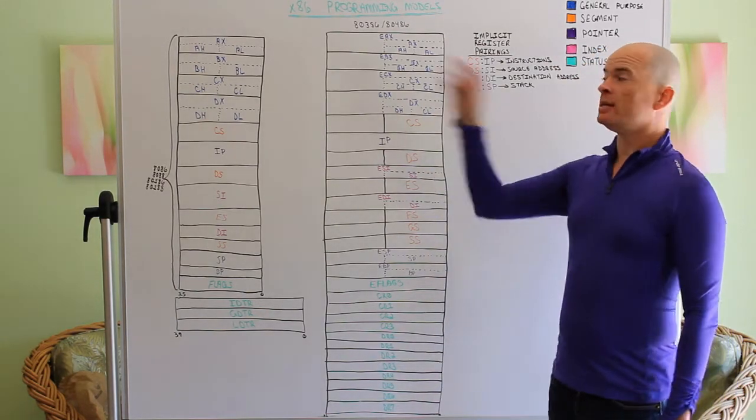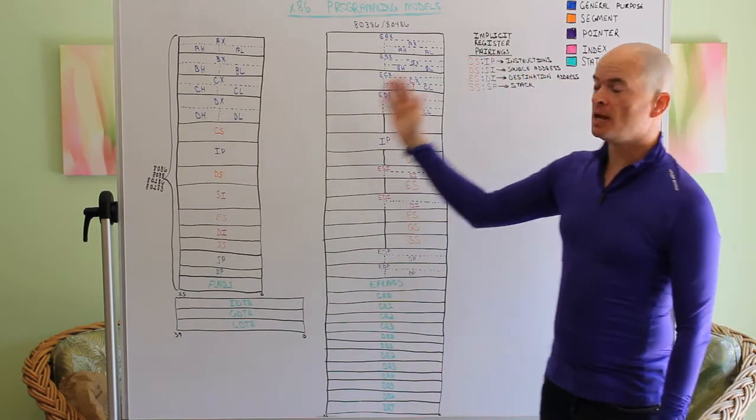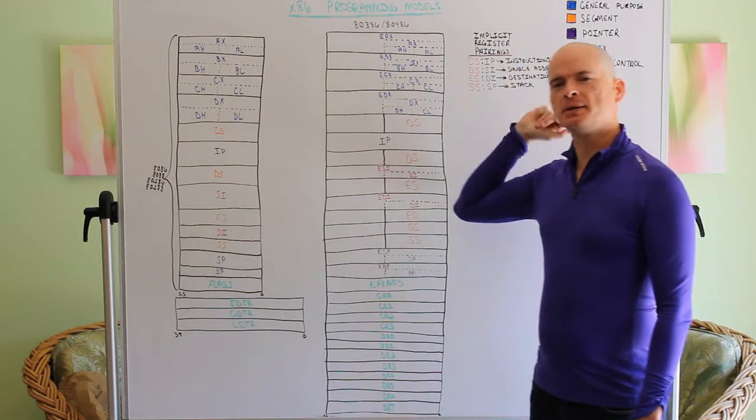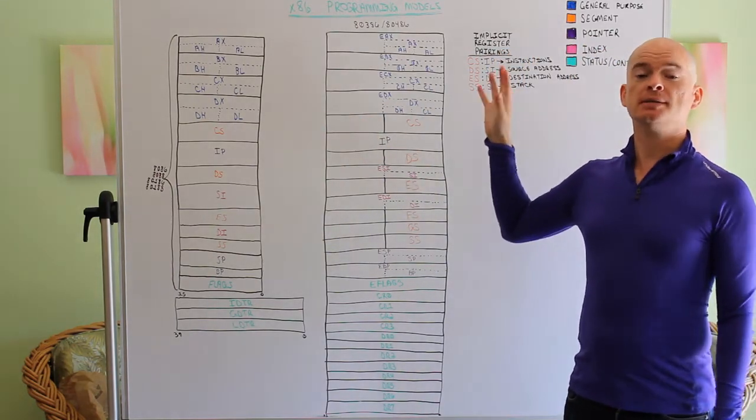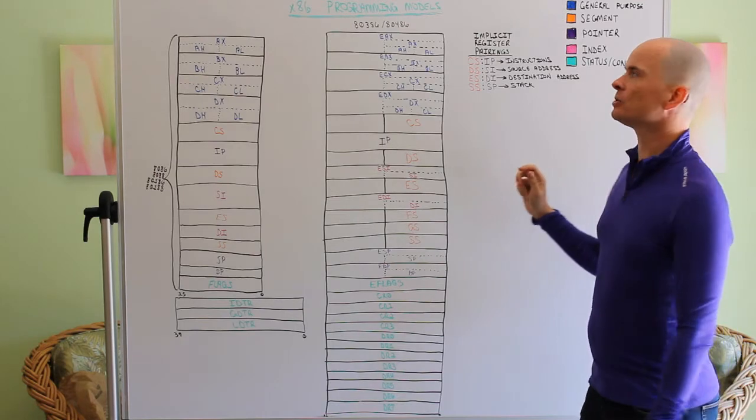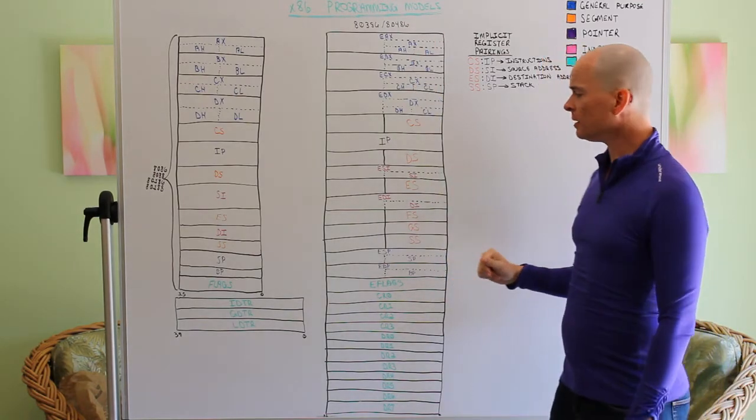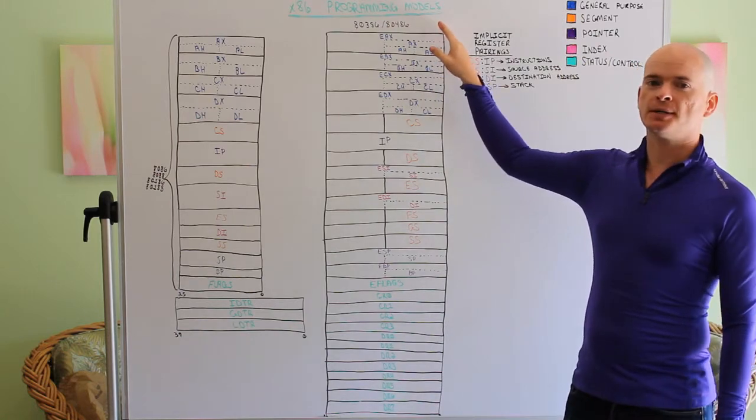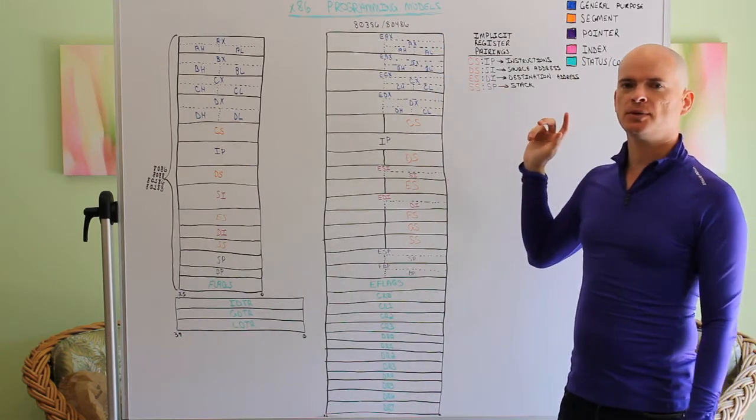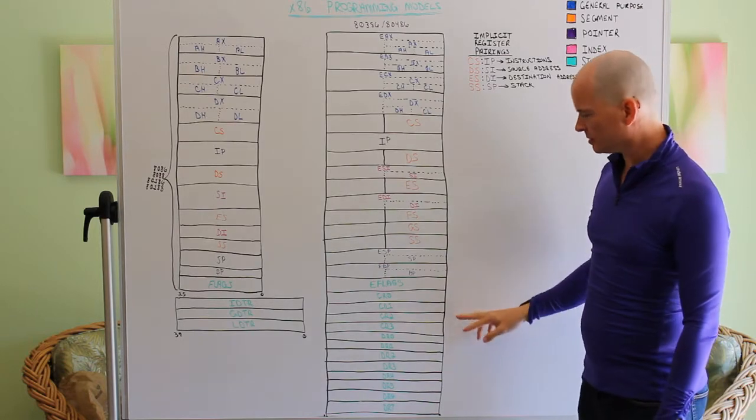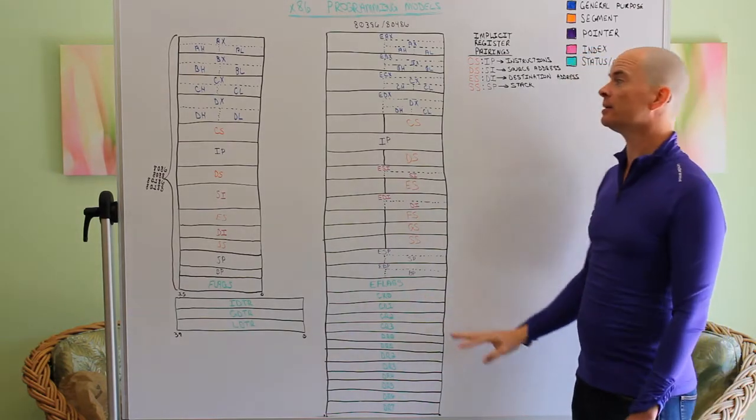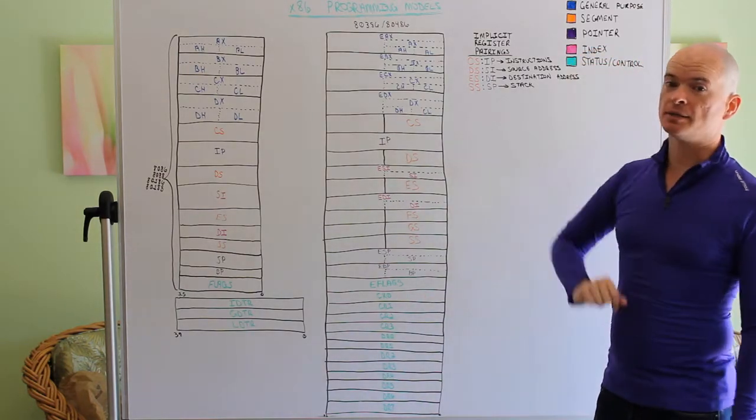Let's go over the x86, from the 8086 all the way pretty much onward to the Intel and AMD processors we have today. Let's go over the programming models. We're not going to go too far beyond the 486 because some of the other things we don't need to worry about at this point.